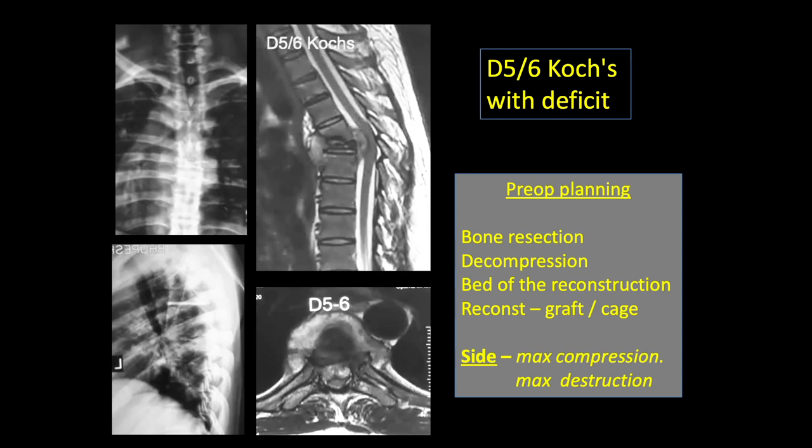Coming to our case, this is a patient of D5-D6 cox with anterior destruction, kyphosis, and cord compression resulting in neurological deficit, which needs anterior decompression, reconstruction, and global fusion. In the pre-operative planning, bone resection, the bed of the graft, and the reconstruction depend on the X-rays and CT scan, where the extent of decompression is usually assessed on the MRI.